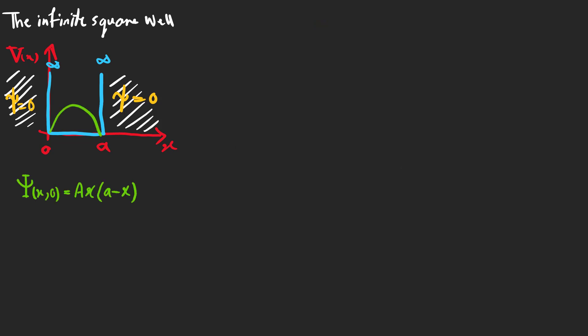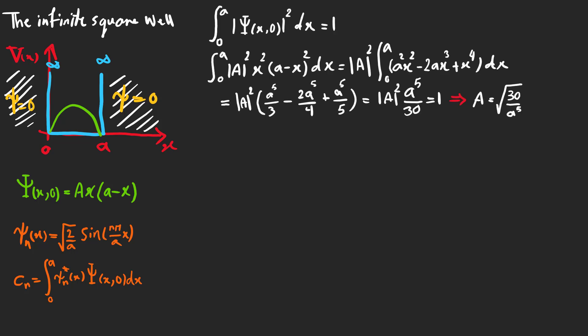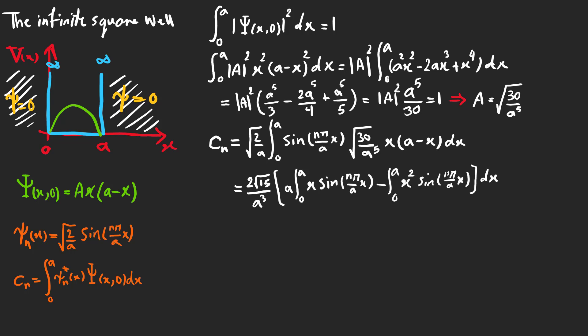As an example, suppose that a particle is in an infinite square well with this initial wave function. We have these two expressions to find the wave function at time t. First we need to normalize the initial wave function and the next step is to find the coefficients.